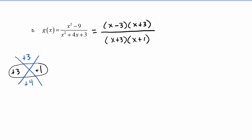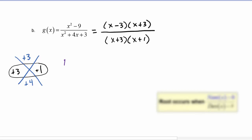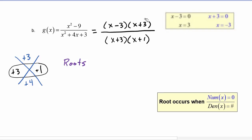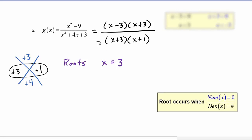Using the same rules as before, roots occur when the numerator is zero but the denominator is not. The numerator is zero at x equals three and x equals negative three. There is a root at x equals three, but not at x equals negative three because the denominator is also zero there. So the root is at (three, zero).